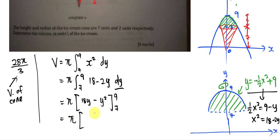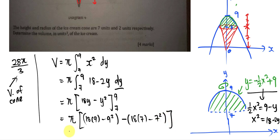Integrating, 18 becomes 18y and negative 2y becomes negative y squared, evaluated from seven to nine. Substituting: (18 times 9 minus 9 squared) minus (18 times 7 minus 7 squared) equals (162 minus 81) minus (126 minus 49) equals 81 minus 77 equals 4. So the volume of the ice cream top equals 4π.